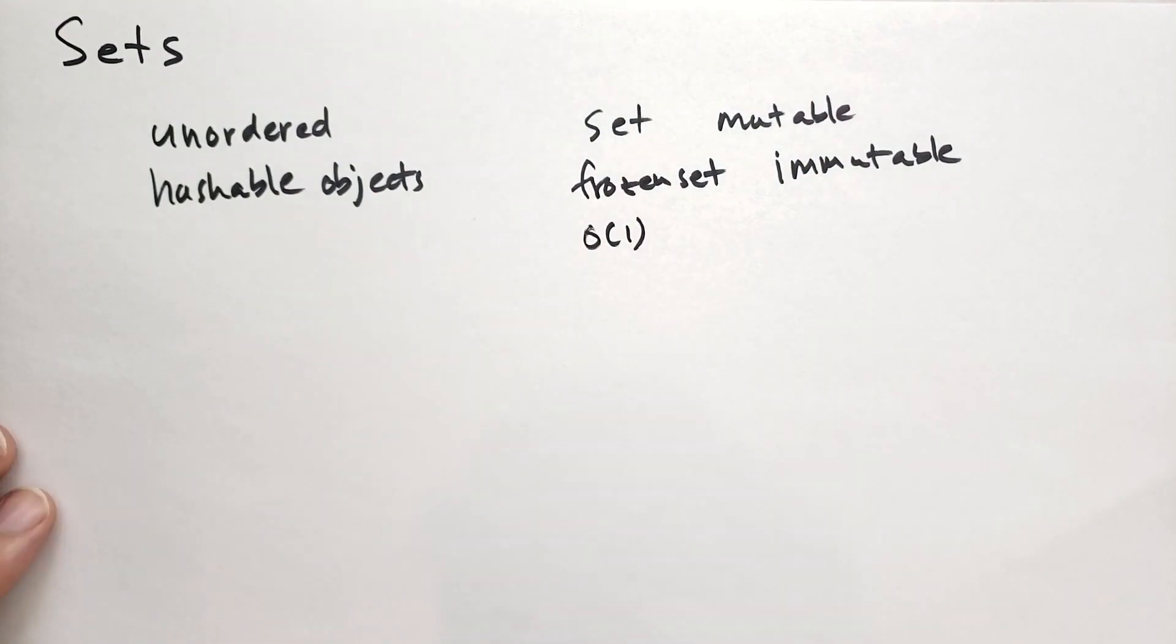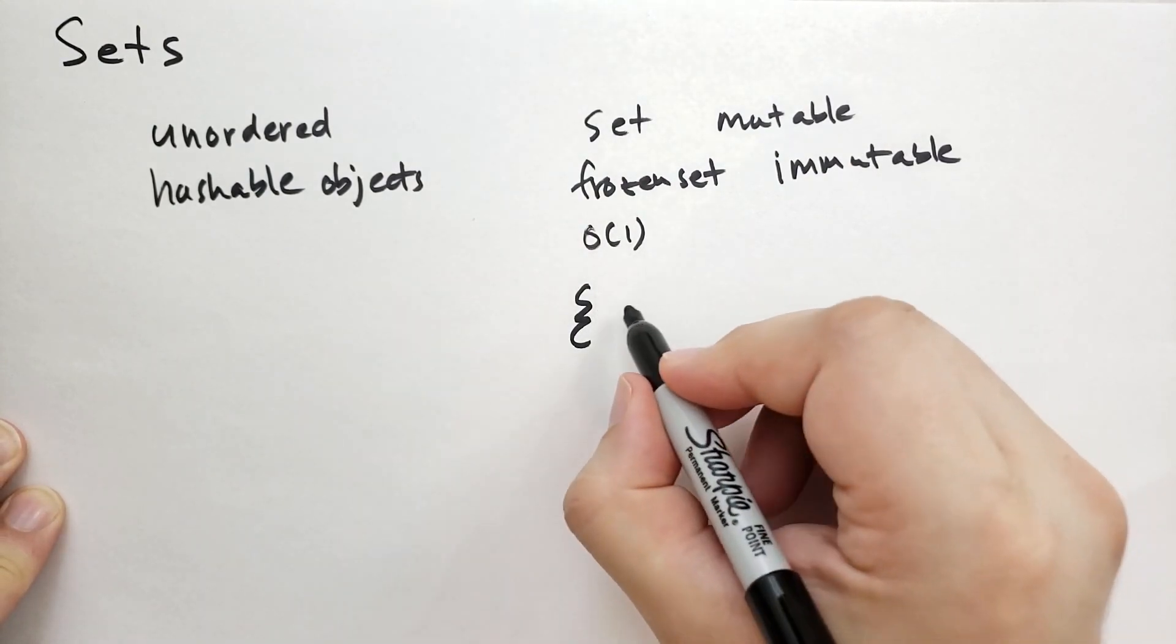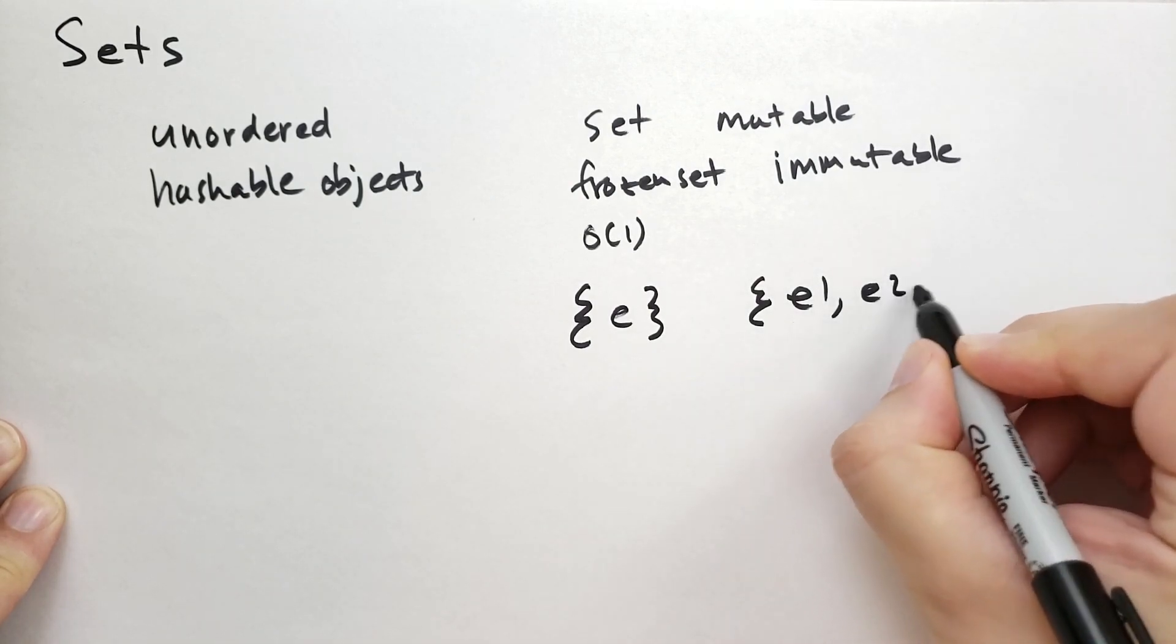In Python, when we want to define a set, we can use curly braces. However, we can't use an empty curly brace. We need at least one element, and we can have multiple elements separated by commas.